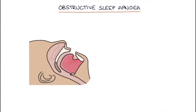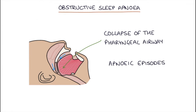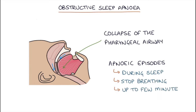Obstructive sleep apnea is caused by collapse of the pharyngeal airway during sleep, and it's characterized by apneic episodes during sleep where the person will stop breathing periodically for up to a few minutes. This is usually reported by the partner, as the patient is unaware of these episodes.